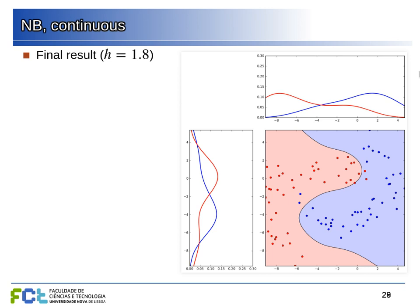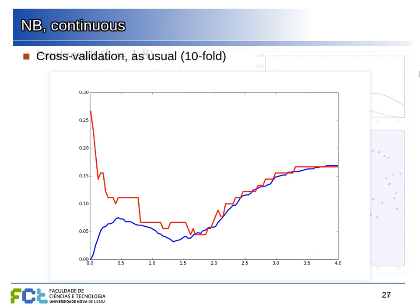This is similar to what you'll do in the first assignment. The difference is that you have four features instead of two, so plotting in the feature space isn't feasible, but you'll still need to fine-tune the kernel width parameter using cross-validation and show those plots.